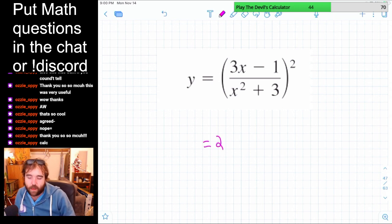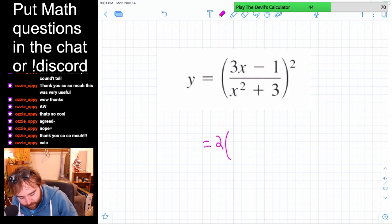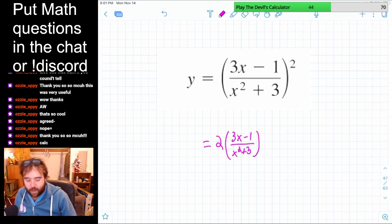We're just going to bring the two to the front. The inside stays the same. So the inside is that entire fraction. And then we decrease the power by one. So now it's just to the first power.